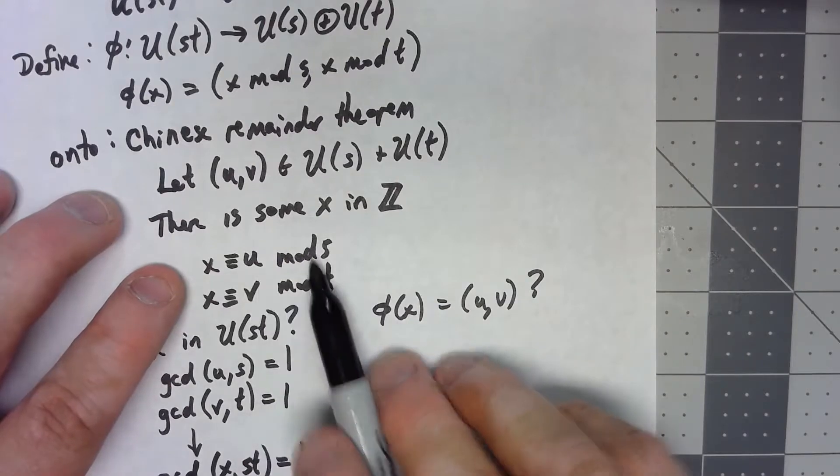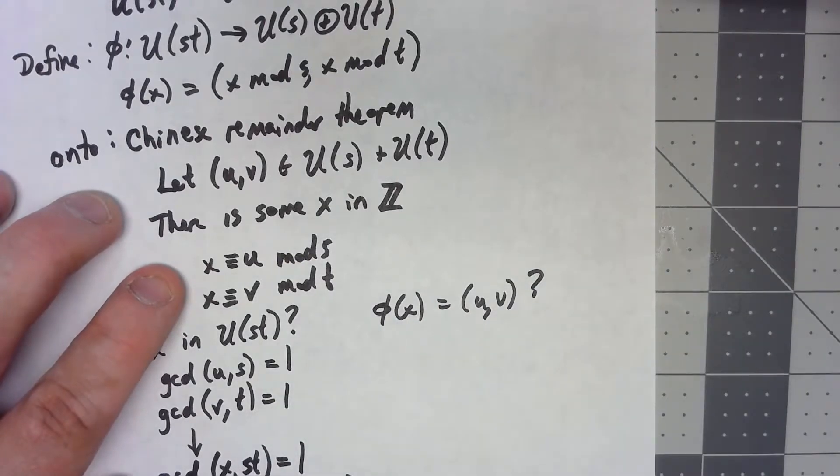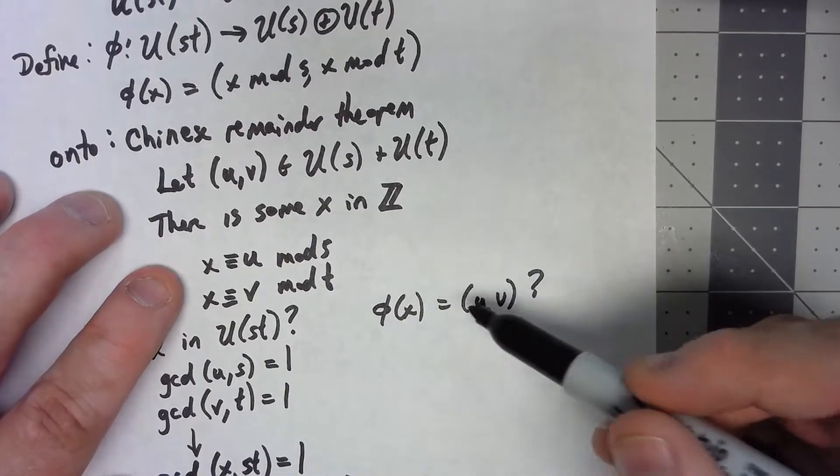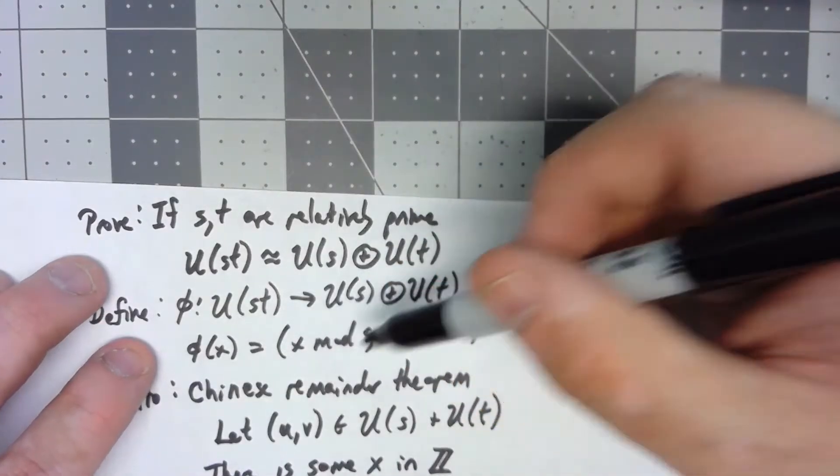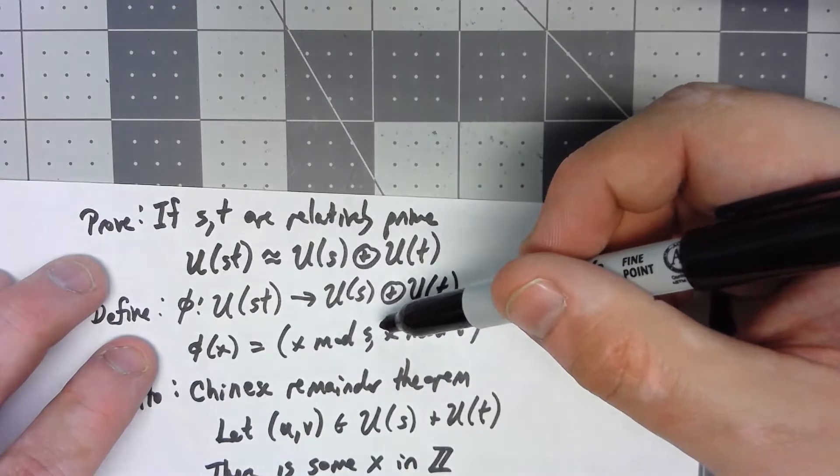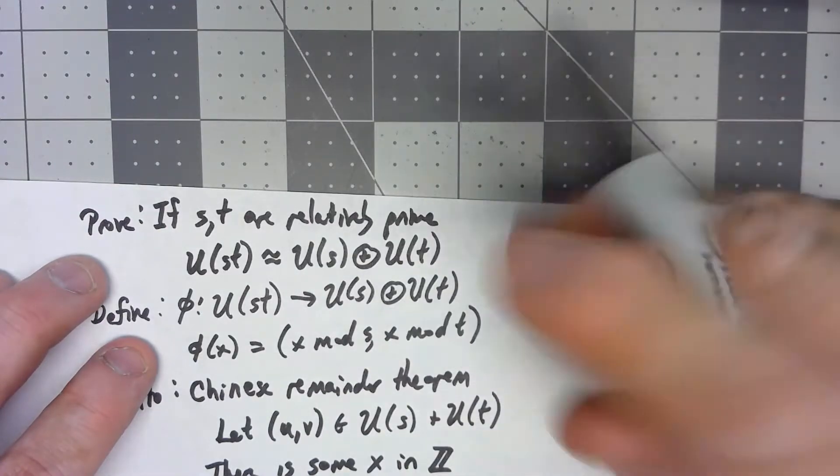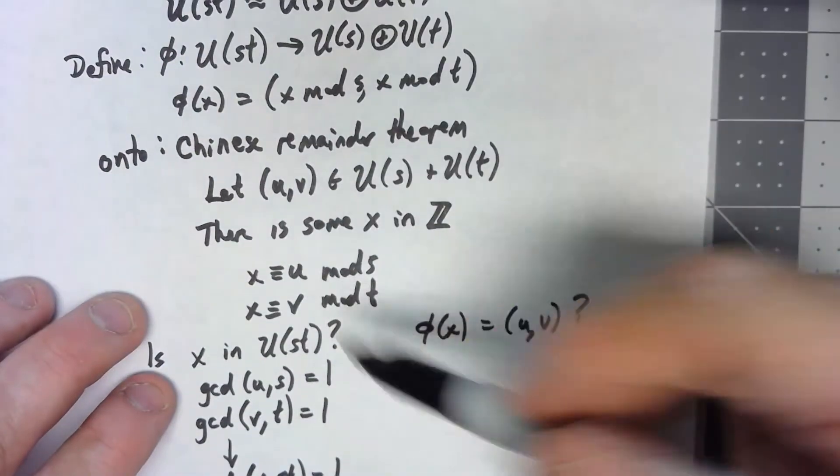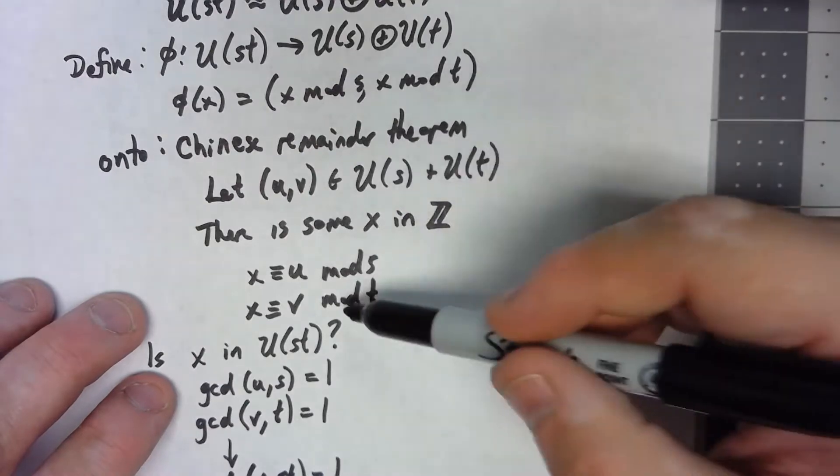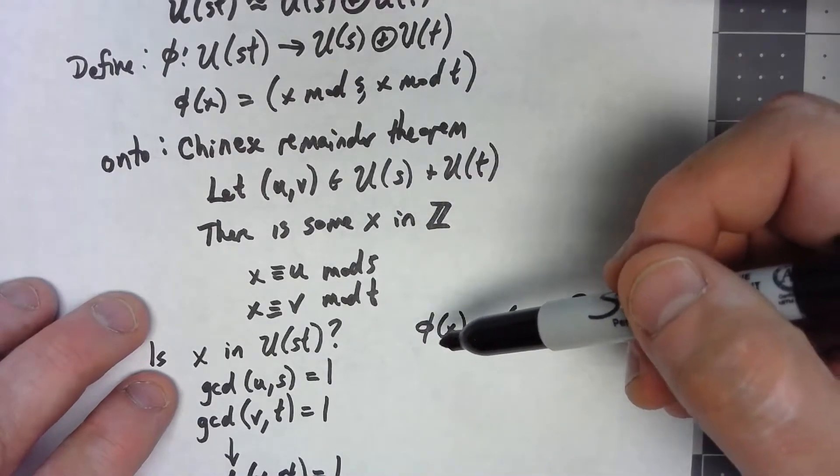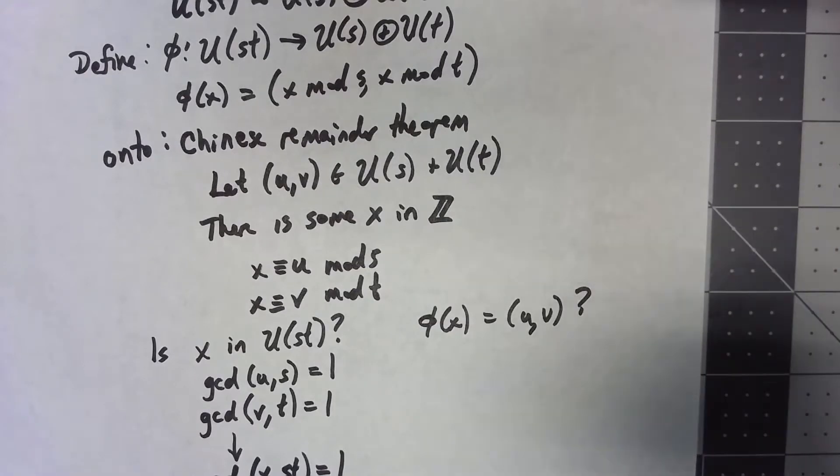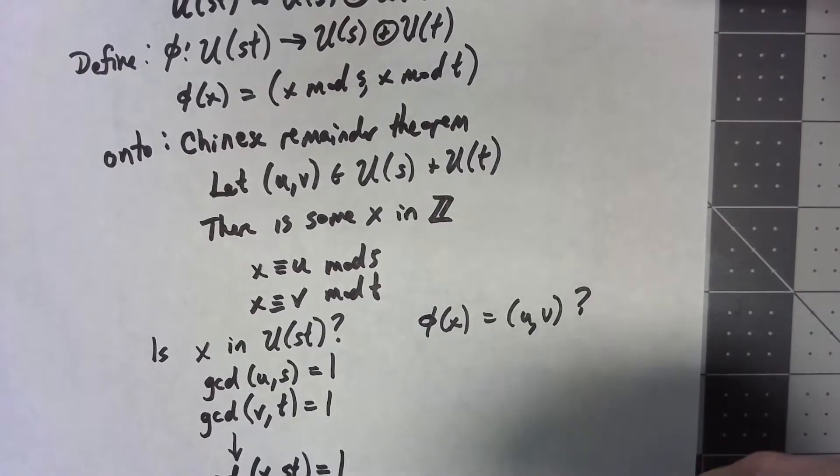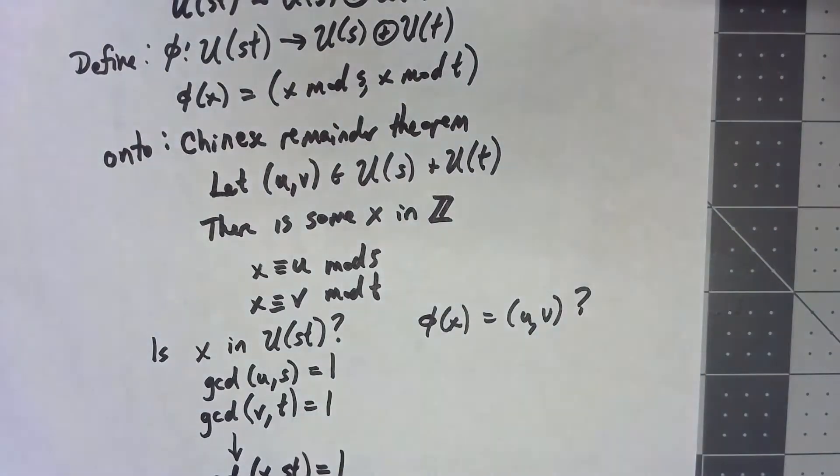Because x is congruent to u mod s, even when I do this mod st thing, when I take the thing through my phi and do x mod s, I have to be getting u. When I take it mod t, I have to be getting v. So again, there's a lot of number theory that's a bit more advanced, but it all does work.